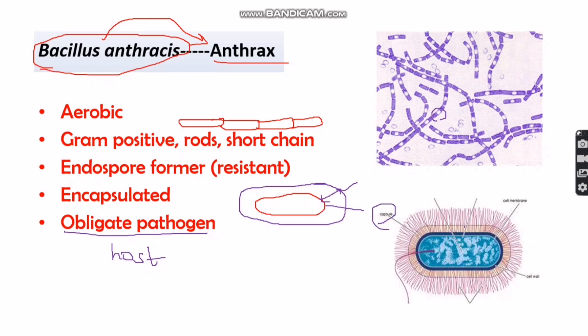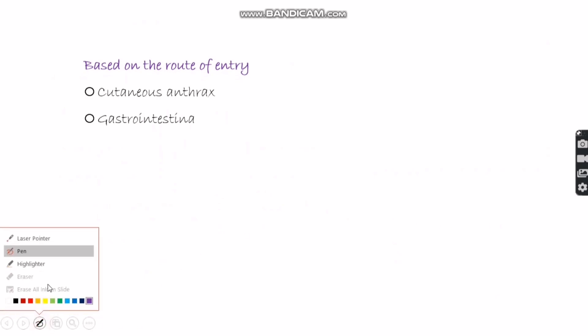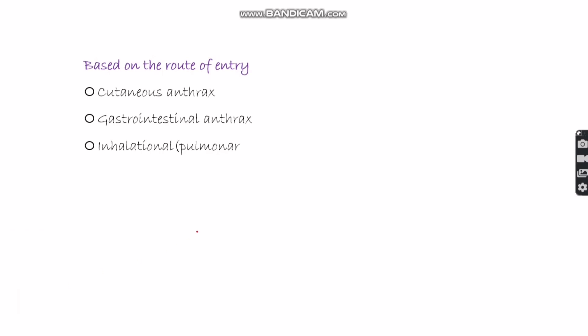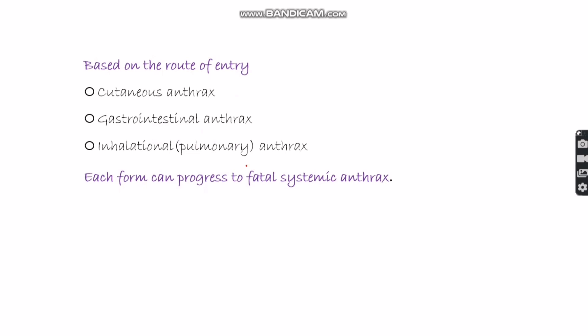Based on route of entry, there are three types of anthrax: cutaneous anthrax (also known as skin anthrax), gastrointestinal anthrax, and inhalational or pulmonary anthrax. Each form can progress to fatal systemic anthrax if left untreated.